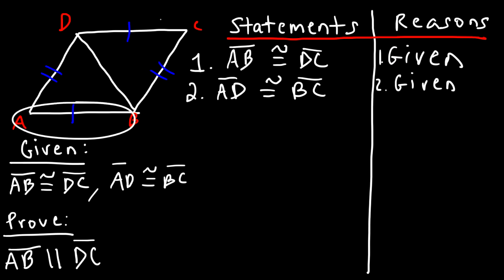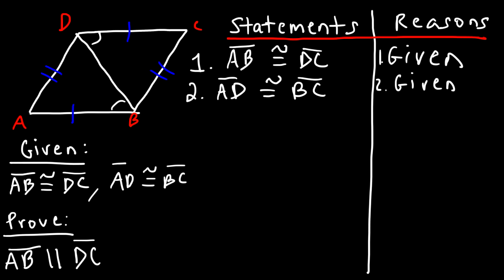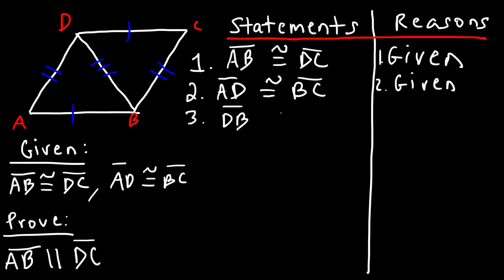Our goal is to prove that AB is parallel to DC. To do that, we need to prove that certain angles are congruent — specifically alternate interior angles formed by transversal DB. If triangles ADB and CBD are congruent, we can prove those angles are congruent and therefore the lines are parallel. To prove the triangles congruent we need a third side: DB is the common side, so statement 3 is that DB is congruent to itself by the reflexive property.